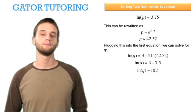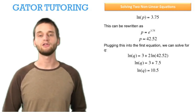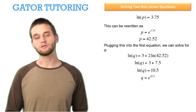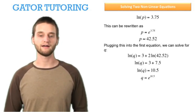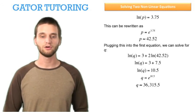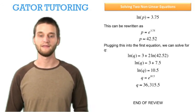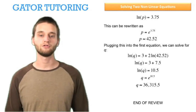Using the definition of the natural logarithm, we can rewrite this as q equals e raised to the 10.5. And if we evaluate this, we get an estimate for q, 36,315.5. And that's the end of the review for solving two nonlinear equations.